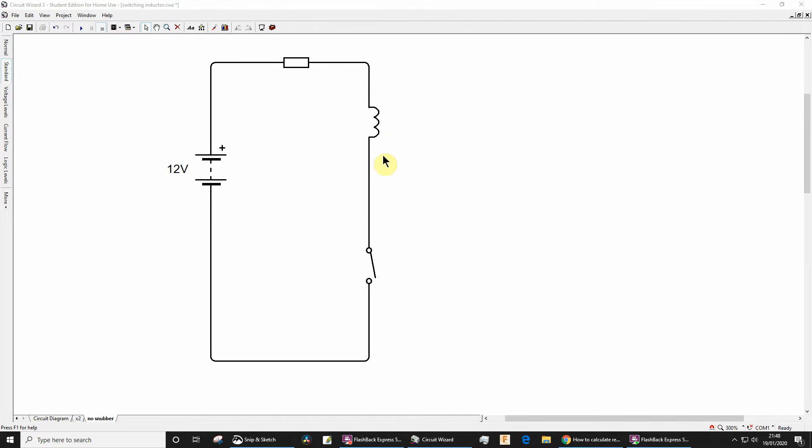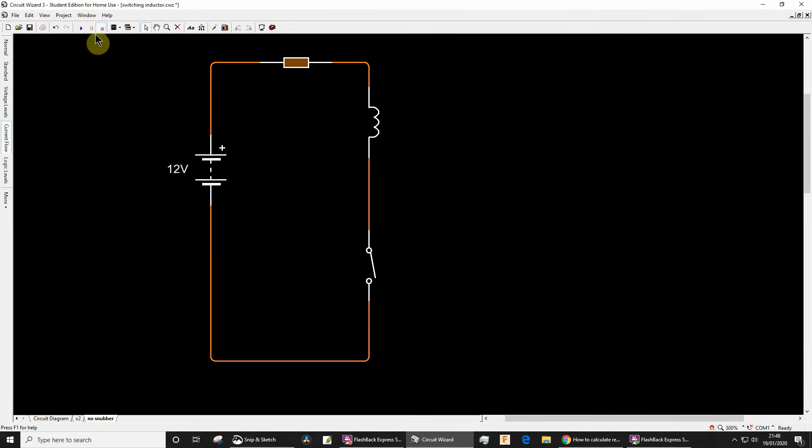When the switch is open, the flow of current will be interrupted and the coil will increase the voltage across the switch to keep the current flowing. The transient voltage can be much higher than the source voltage of say 12 volts and could lead to sparking and premature failure of the switch. If we run this simulation, you see at the moment no flow of current, and when I close the switch we have current flow, and when I open the switch nothing surprising there.